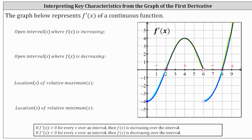Therefore, the open intervals where f of x is increasing would be the open interval from 2 to 6 union the open interval from 8 to infinity. And the function is decreasing over the open interval from 0 to 2 union the open interval from 6 to 8.